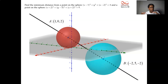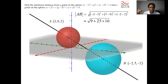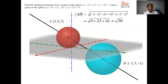How far apart are the two centers? Find the distance from A to B: subtract the x's and square — negative 2 minus 1 is negative 3, squared is 9. Subtract the y's and square — 5 minus 0, squared is 25. Subtract the z's and square — negative 2 minus 2 is negative 4, squared is 16. That's 9 + 25 + 16 = 50. Square root of 50 — simplify: that's 5 root 2. That's how far apart the centers are.